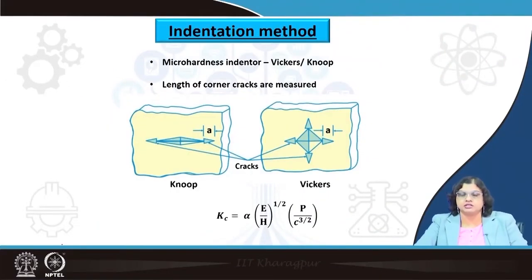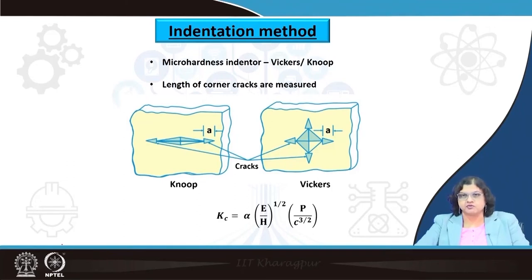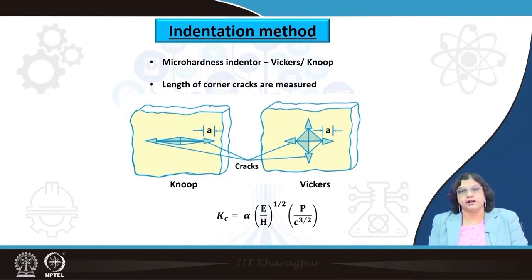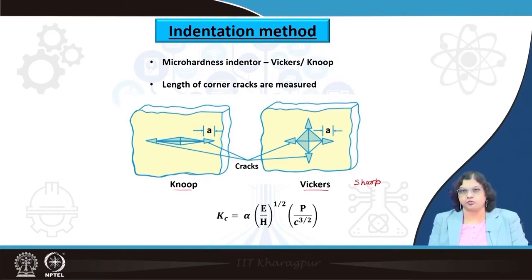Another method is the indentation fracture toughness method, which is conveniently used for estimating the fracture toughness of brittle materials. It is straightforward and requires only a small, well-polished piece. The specimen must be perfectly flat and plane-parallel — any slant on the surface would lead to erroneous results because the indentation force is applied at a specific point.